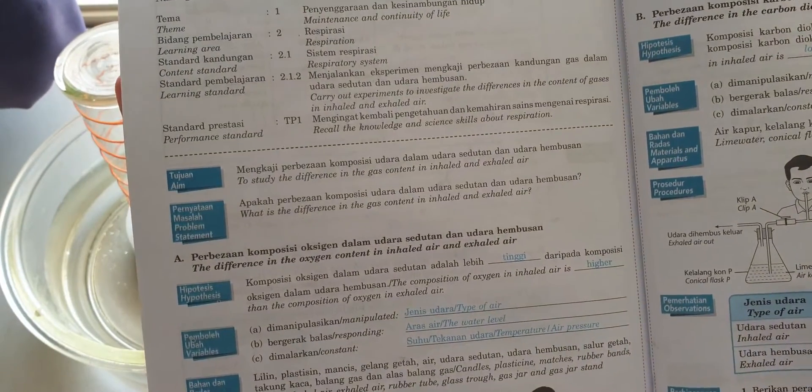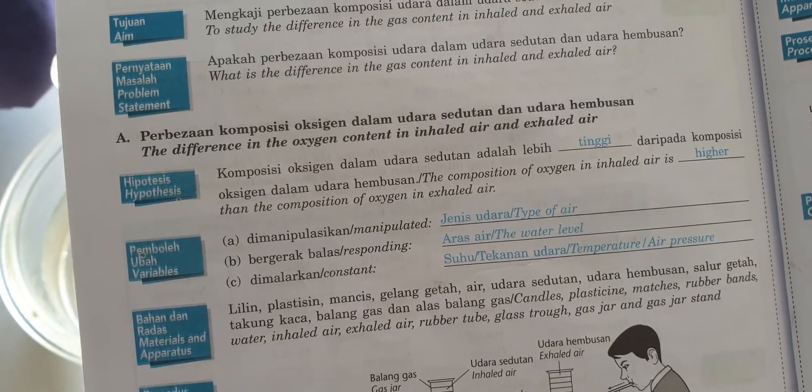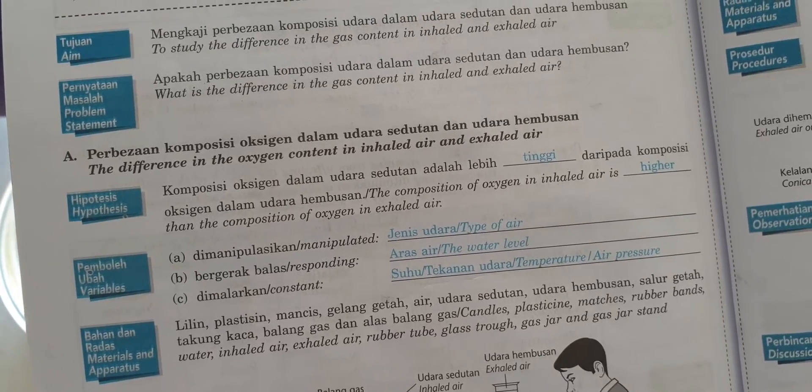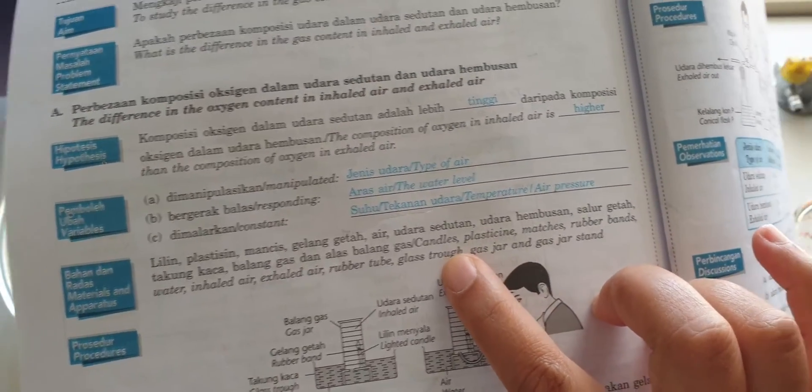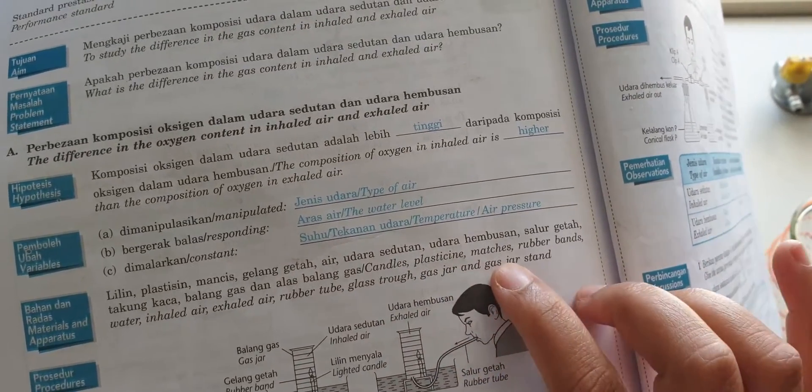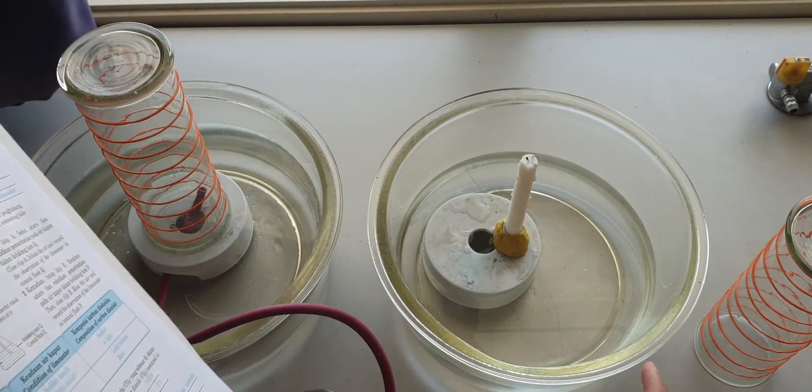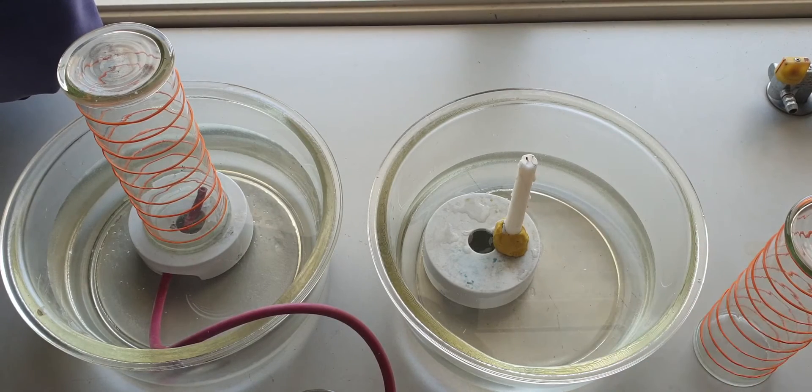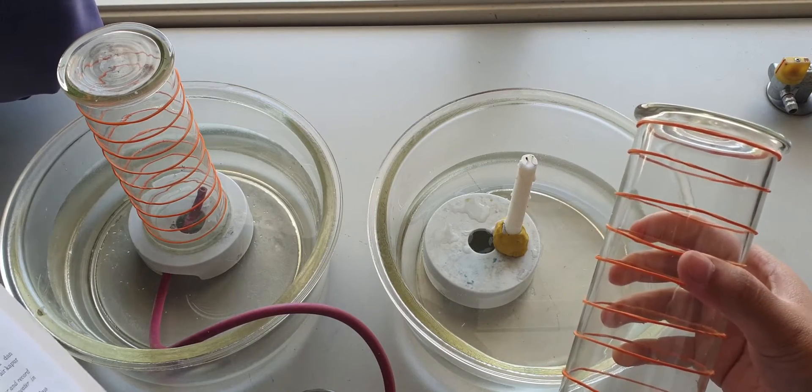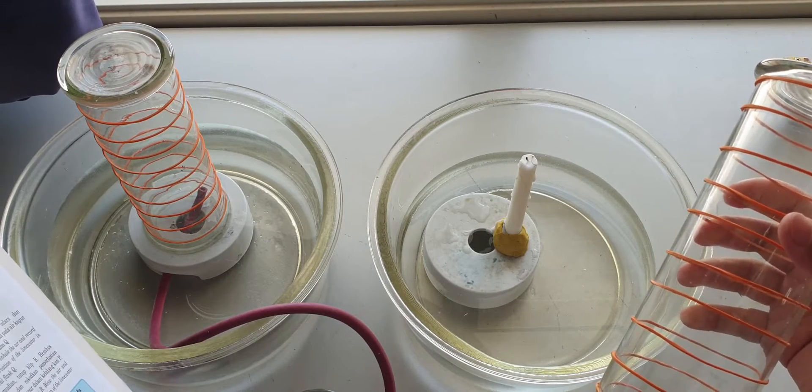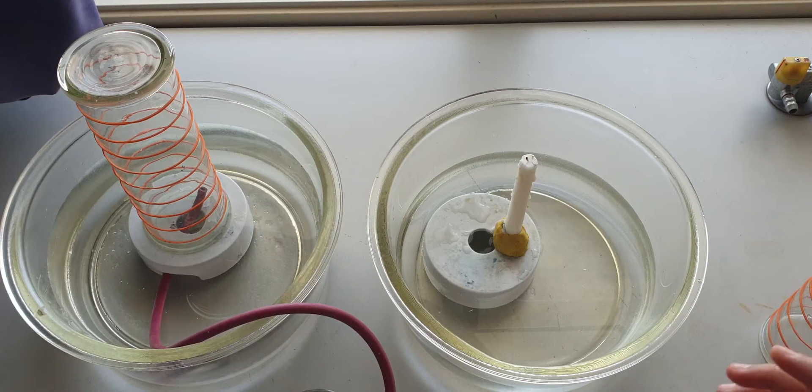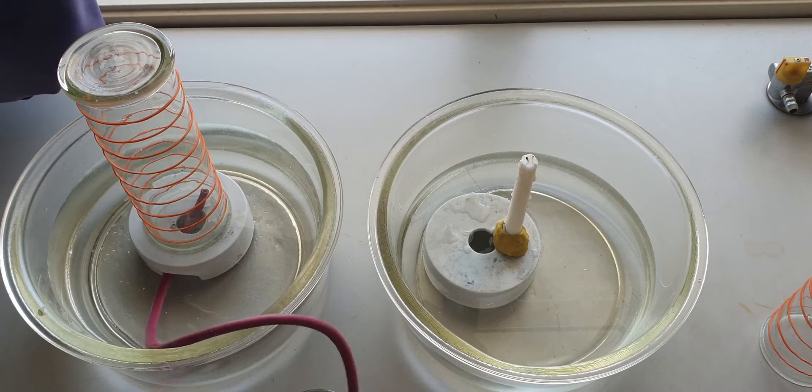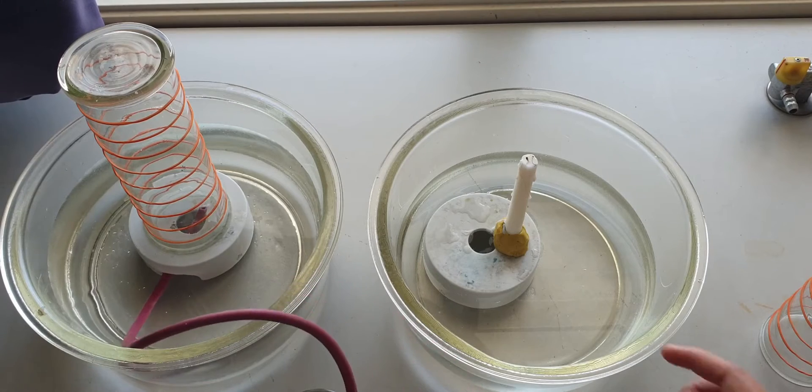The first experiment is to study the difference in the oxygen content in inhaled air and exhaled air. What you need in this experiment are candles, plasticine, matches. You have the candle here, the plasticine, some matches, rubber bands that I already put on the gas jar, and you need glass straws. Actually you need only one but I use two glass straws and some rubber tubes and the candle stand over there.